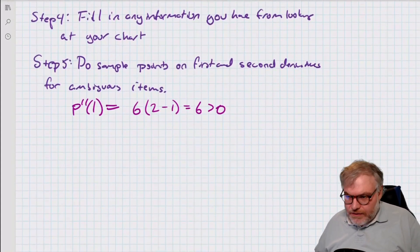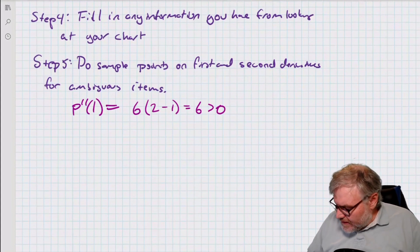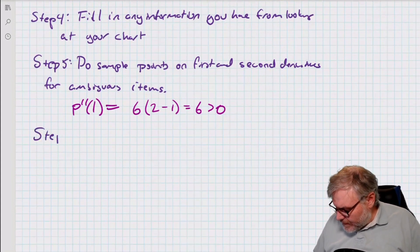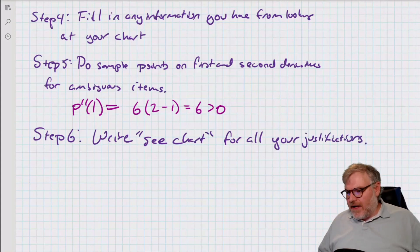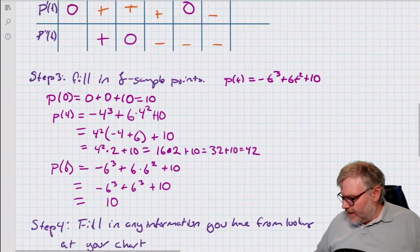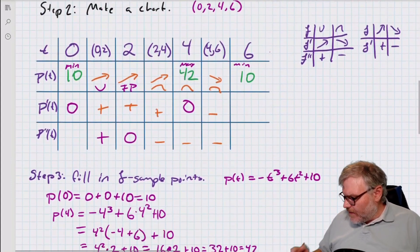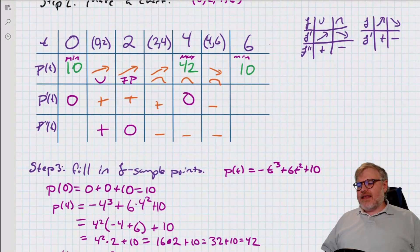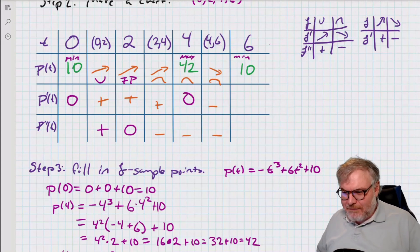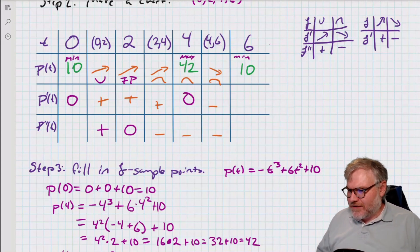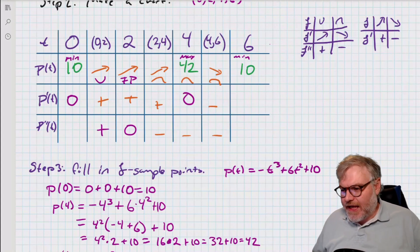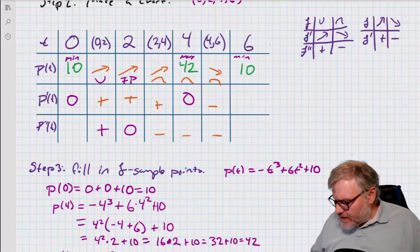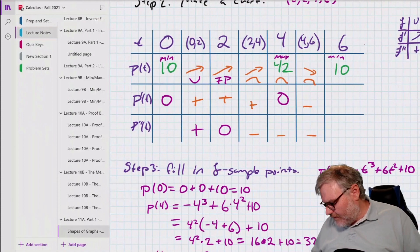For step six, I just write 'see chart' for all my justifications, because I've got everything there: the min, the max, the inflection point. How many sample points did I actually have to compute? I needed the endpoints, the critical value, and just one sample point for f double prime — instead of four separate computations. That's a big time saver on a test. That's how to tackle these things all at once.